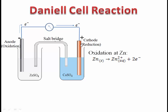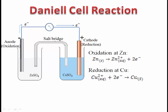On the copper rod, the Cu²⁺ ions from the solution accept two electrons and get reduced to form solid copper, which is deposited on the copper rod. So the reaction is called a reduction reaction. On the cathode, reduction takes place.